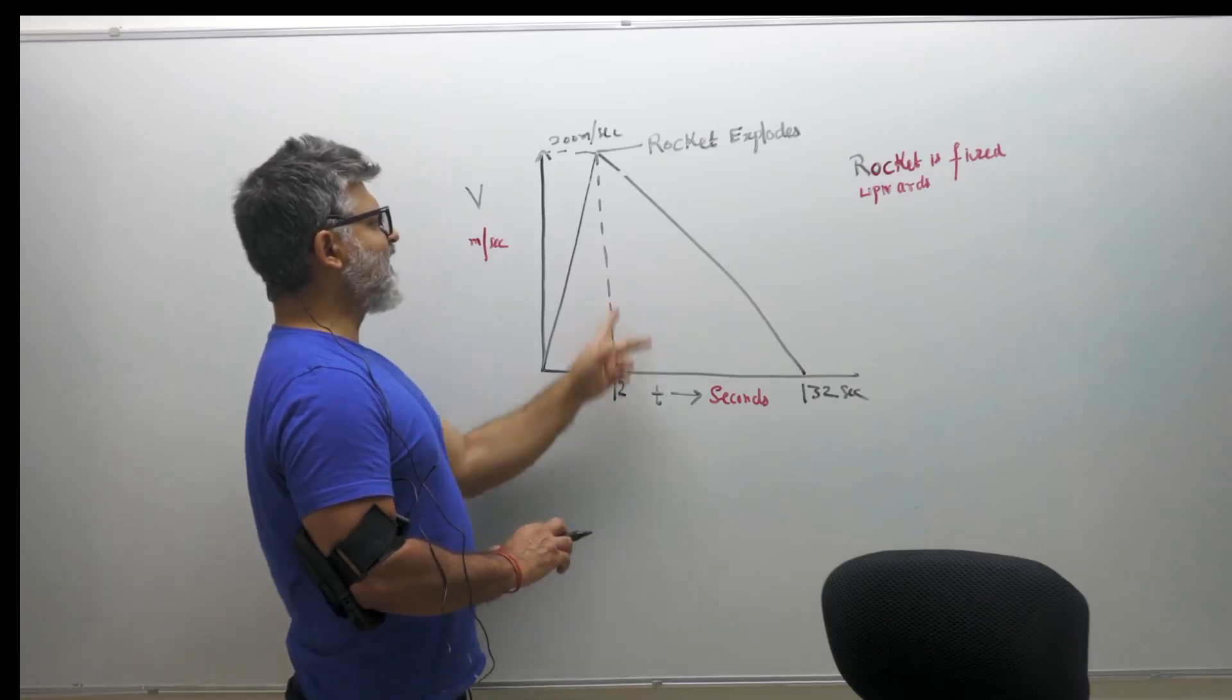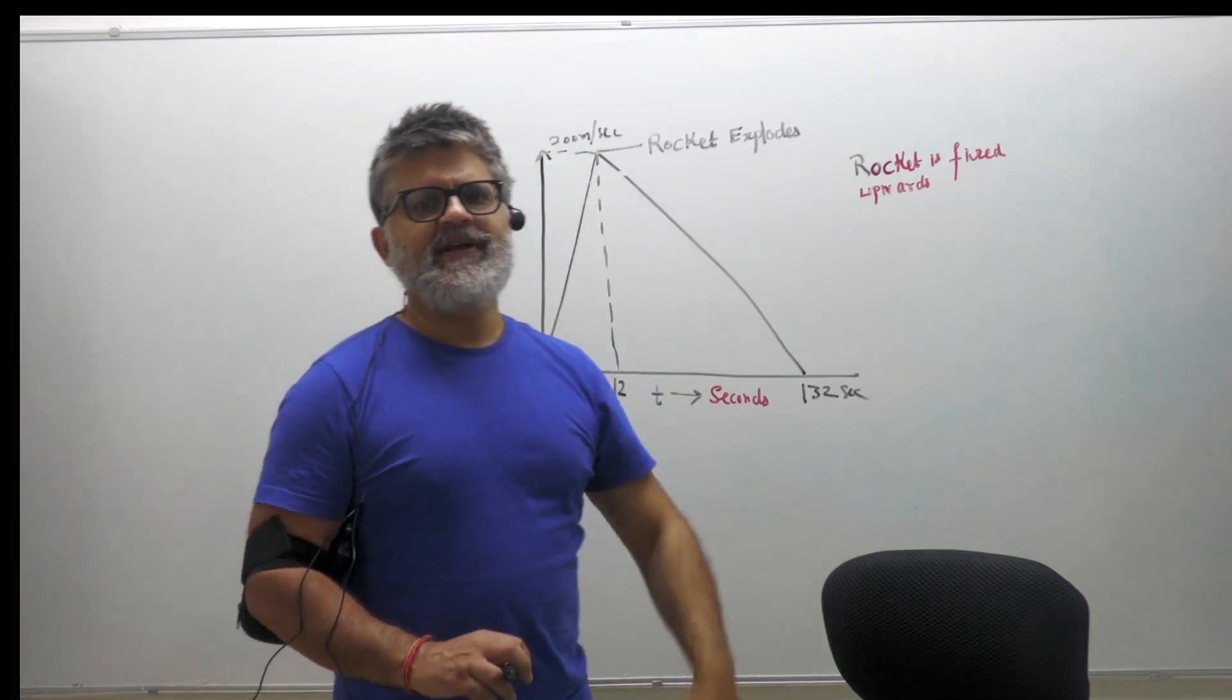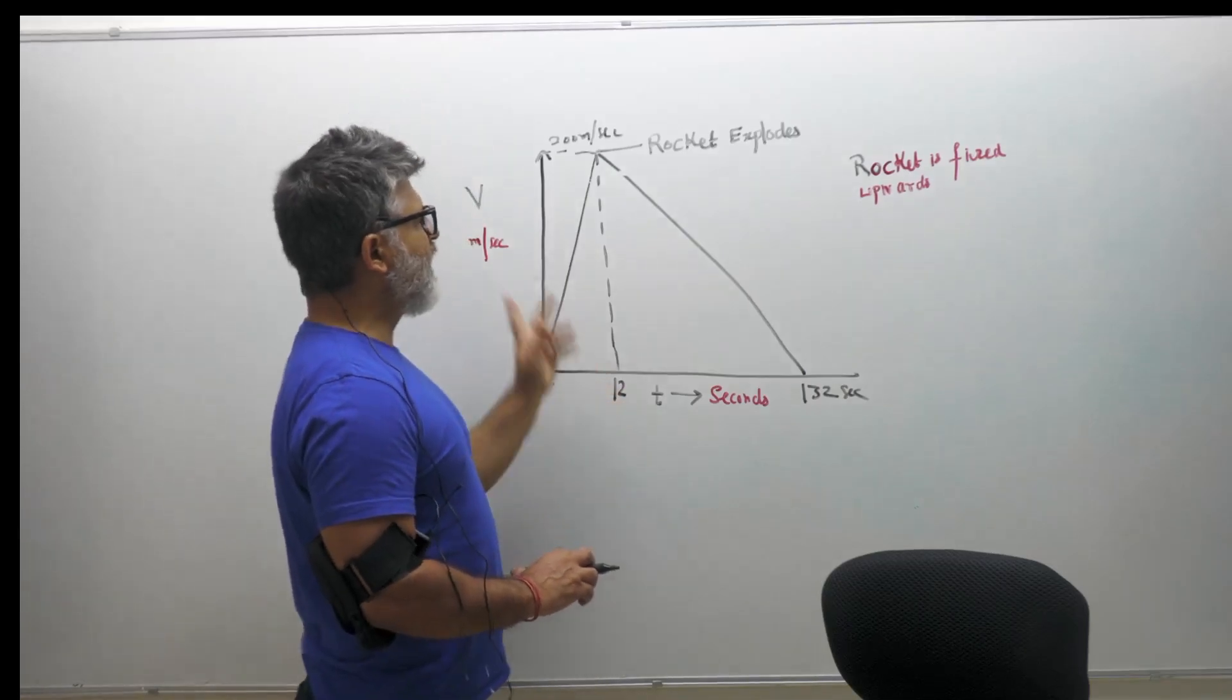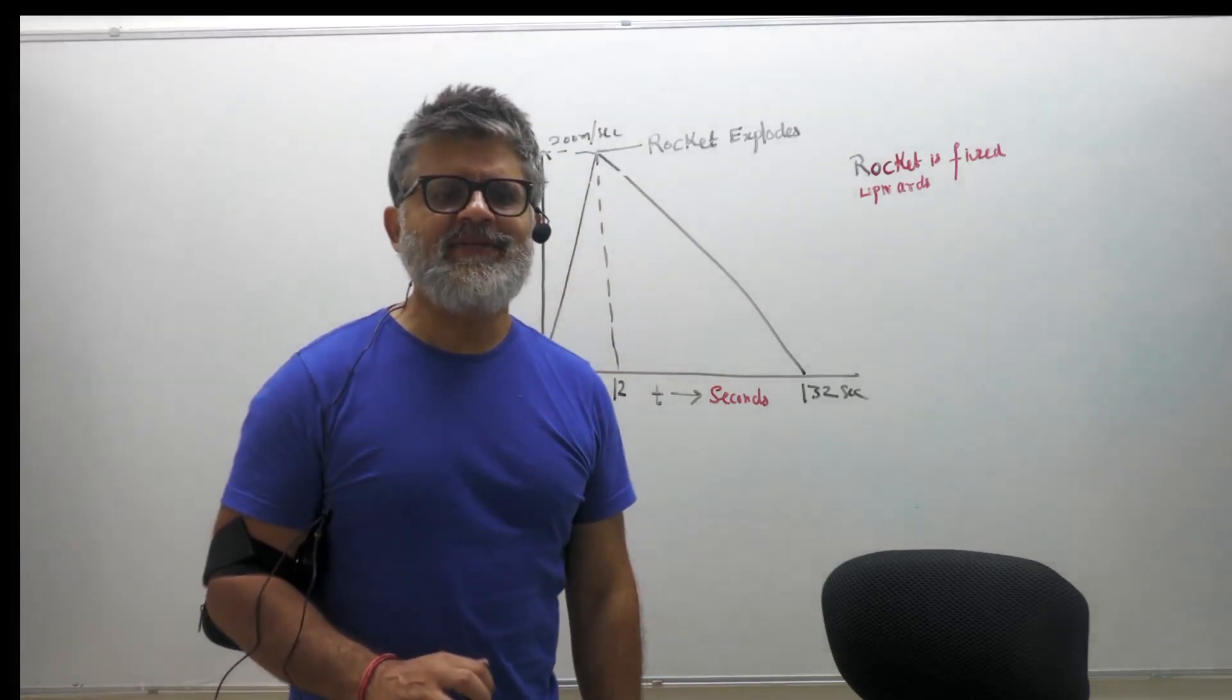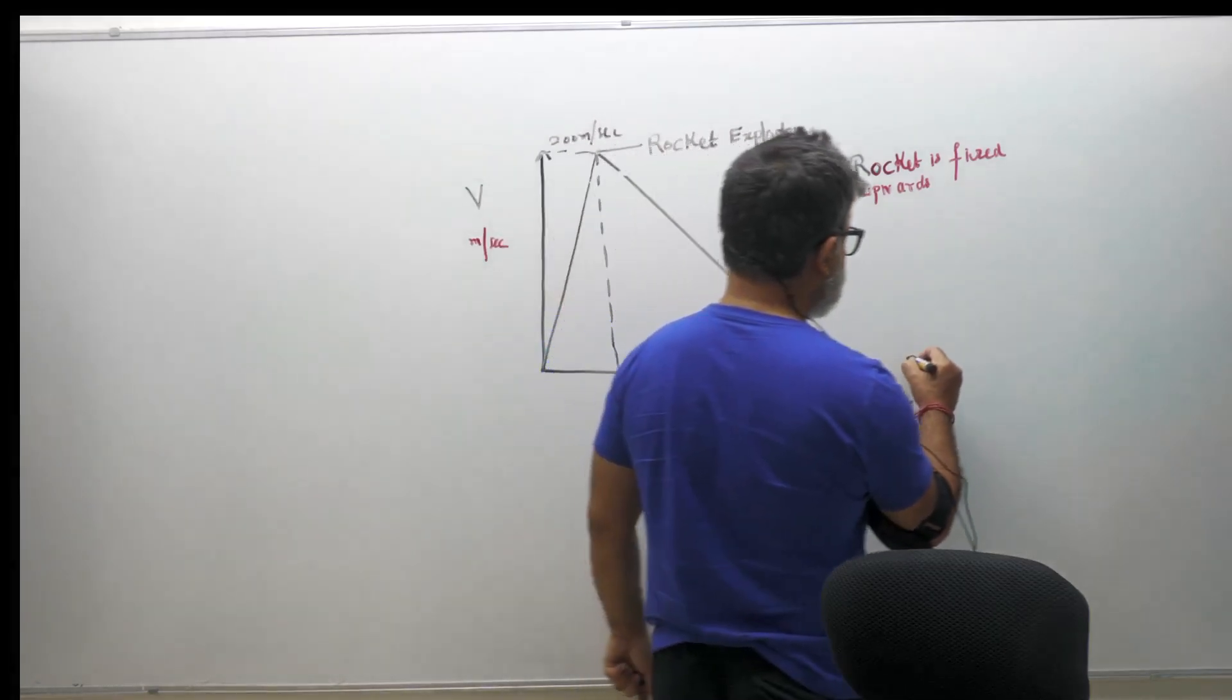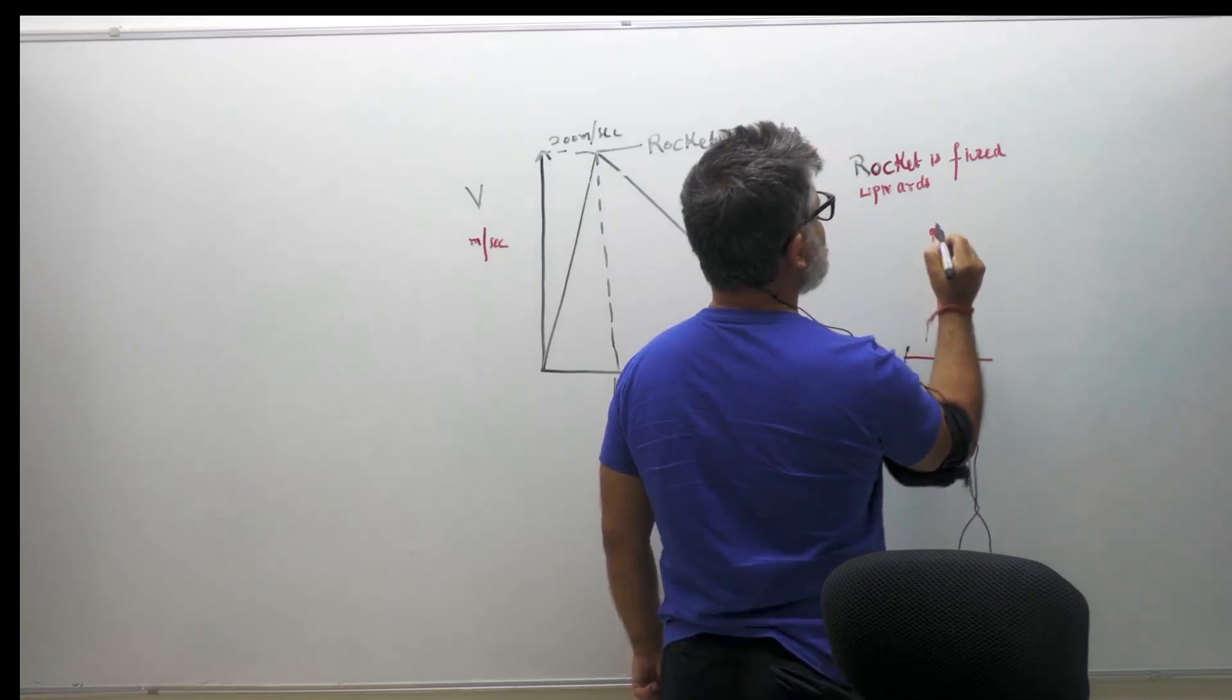What happens is after 12 seconds it explodes into pieces, and then you have to calculate with the help of this graph what is the maximum height which is attained by the rocket.